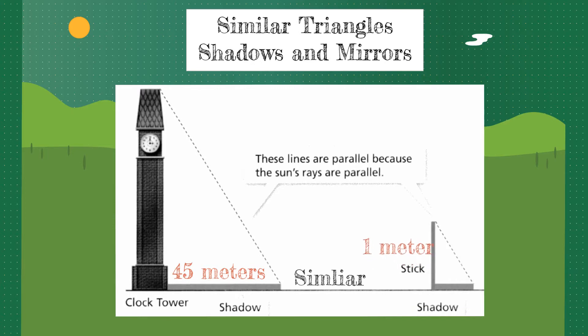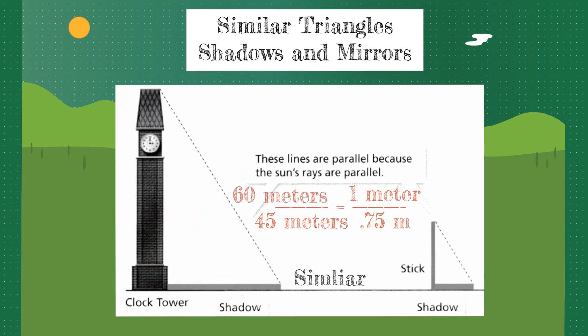So in this example, the clock tower has a shadow of 45 meters while the meter stick has a shadow of 0.75 meters. So what I'm gonna do is I'm gonna set up a proportion because the ratios of the heights to the shadows are equal to each other. From there, I would use cross products and so I would multiply across 1 times 45 and then divide by 0.75 to get a total height of 60 meters.